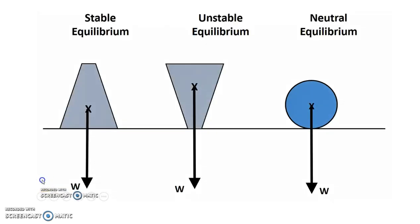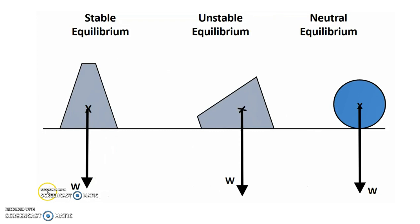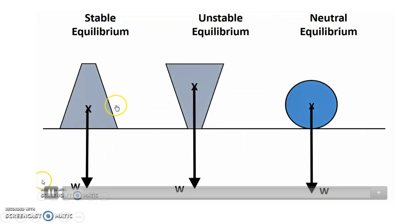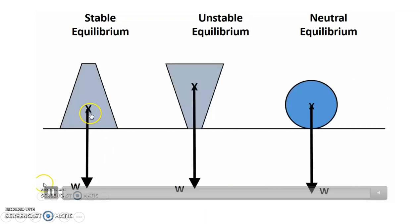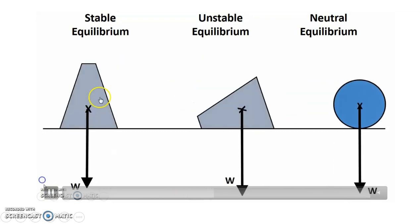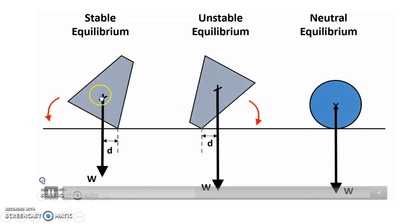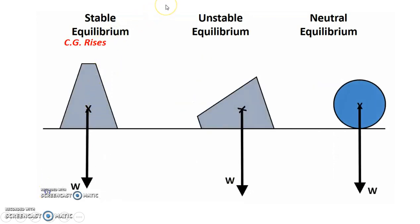So now just looking at three types of equilibrium, you can see for stable equilibrium what happens. Stable equilibrium, as I move, tilt it slightly, can you see what happens to my CG? Center of gravity actually moves, moves up. So the center of gravity rises.